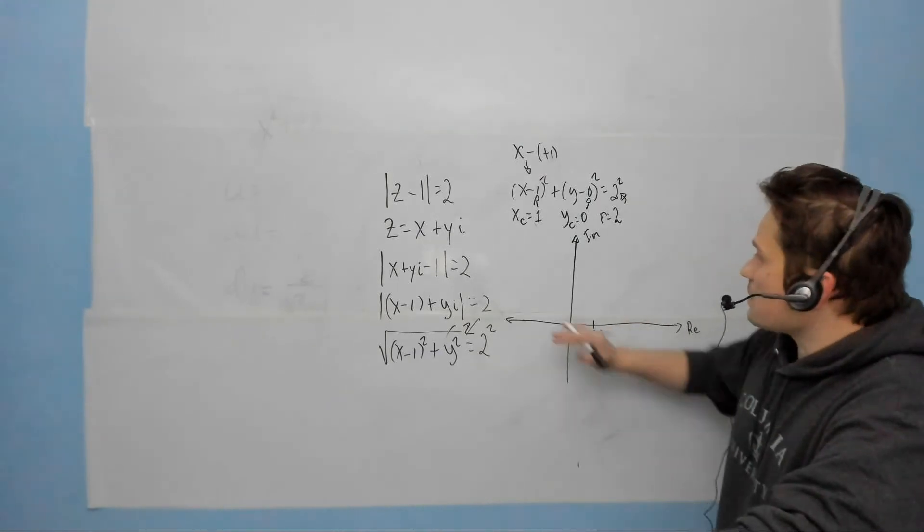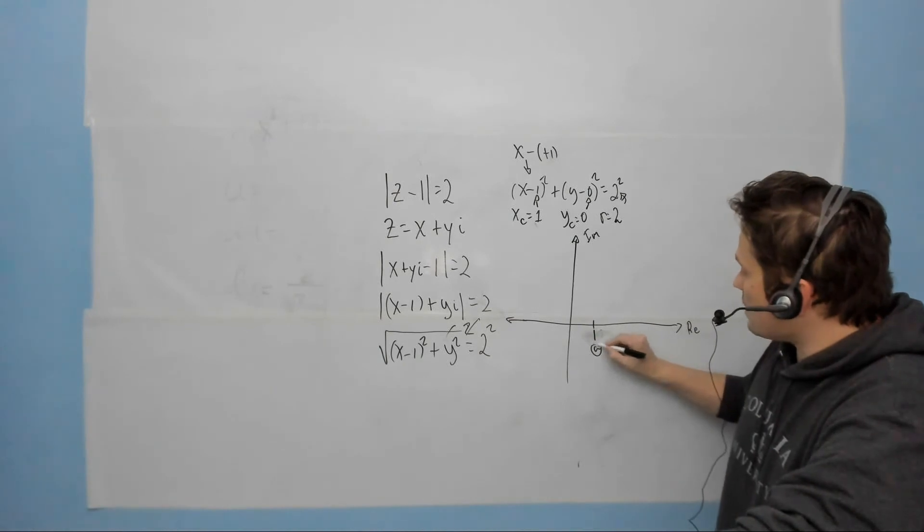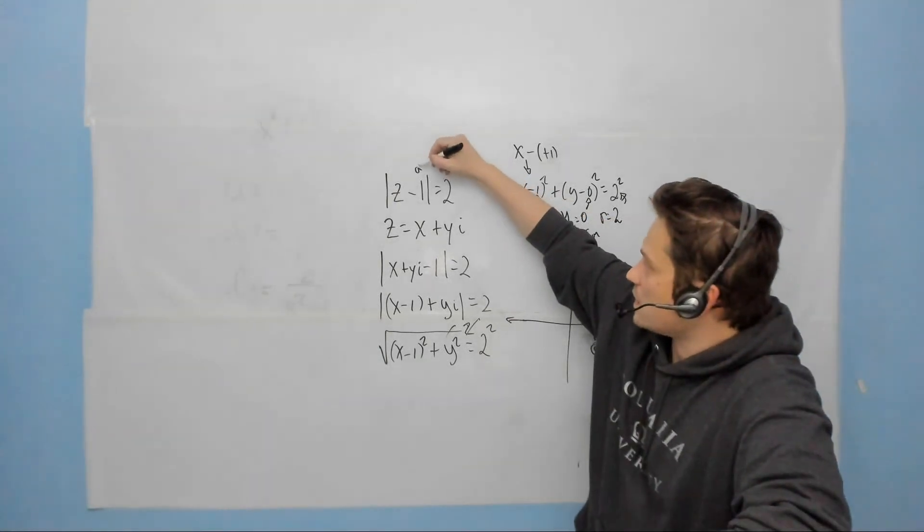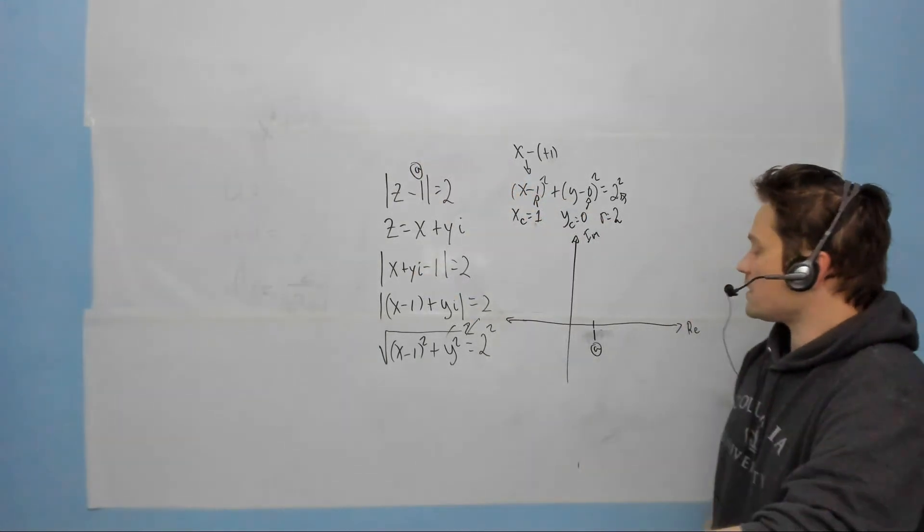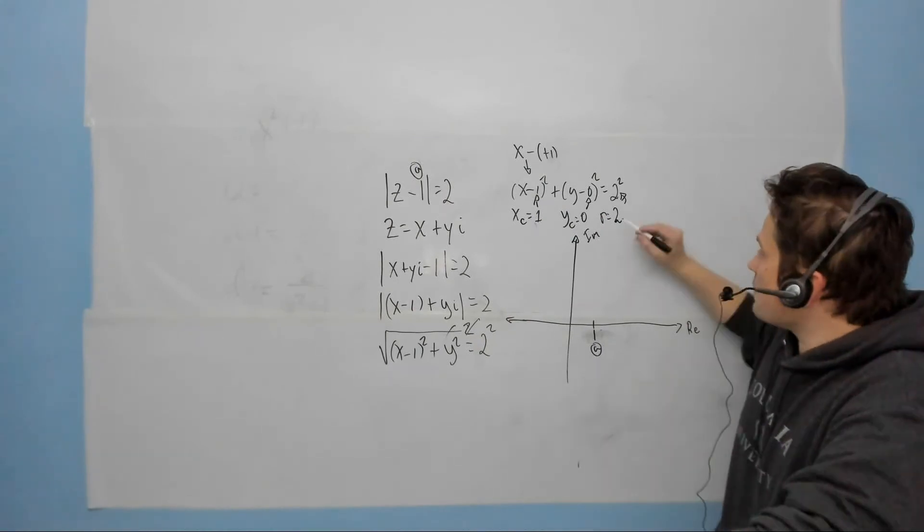That's it. So this is 1. So this I'm going to call A, and this basically corresponds to this 1 right here, the center of the circle.